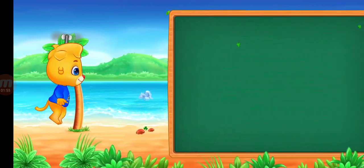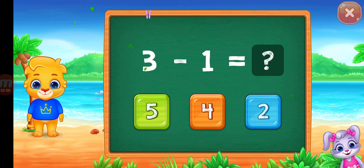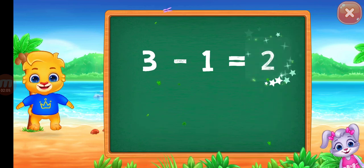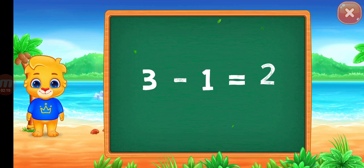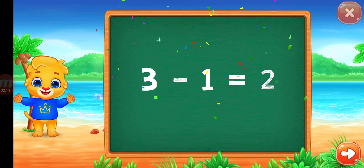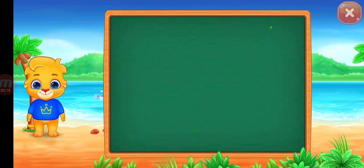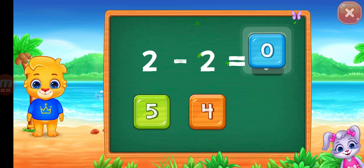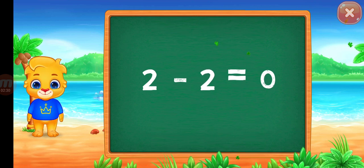Zero. Two, one, three minus one equal to. Zero, two minus two equal zero. Two minus two equal zero.